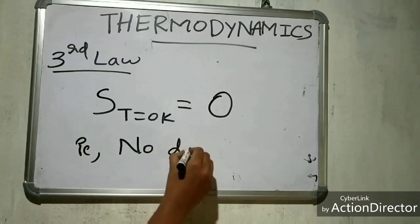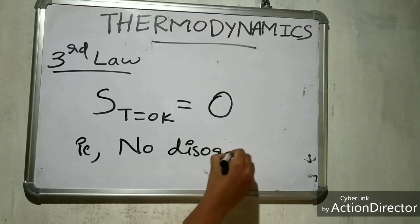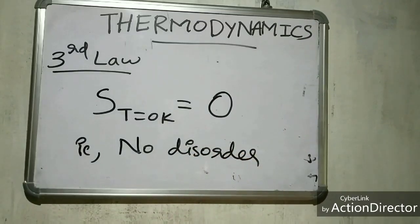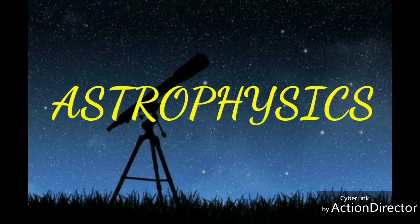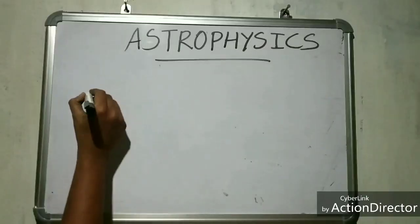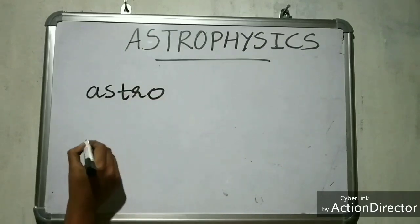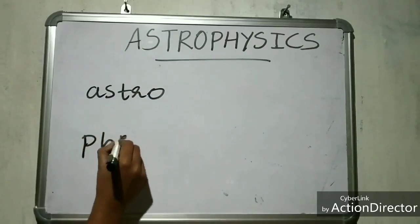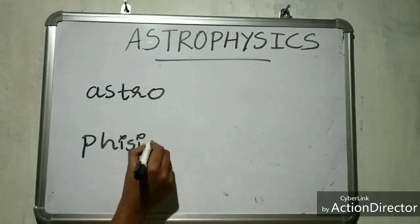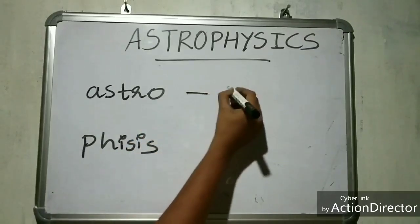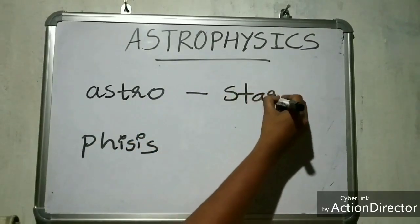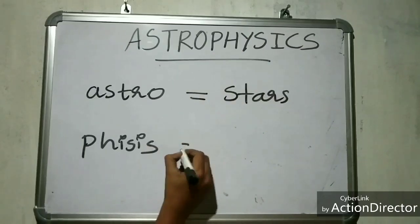The word astrophysics is a combination of two Latin derived words: Astro and Physis. Astro means stars and Physis means nature.